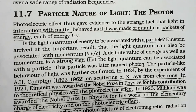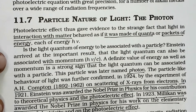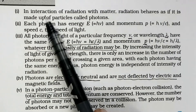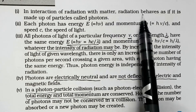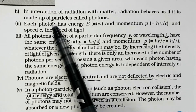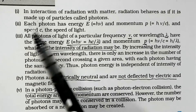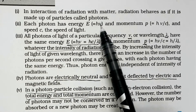To summarize the particle picture: the interaction of radiation with matter shows that radiation behaves as a particle. This particle is called a photon or quantum of light. Each photon has energy E = hν, and this energy is frequency-dependent.